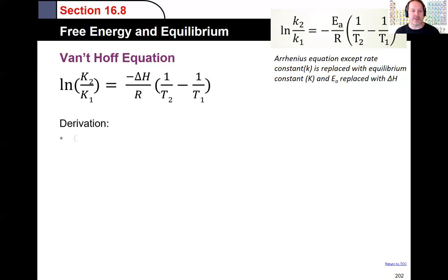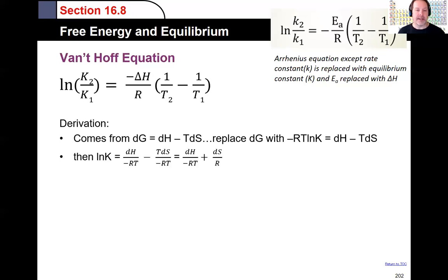Where did it come from? Well it really comes from thinking about the relationship between free energy, delta G equals enthalpy minus T delta S, the entropy. If you replace the free energy term with minus RT ln of K, then you can get minus RT ln of K is equal to enthalpy minus T delta S.